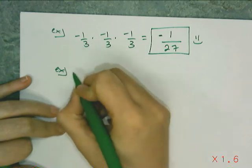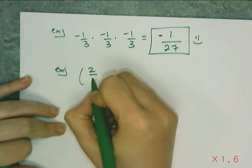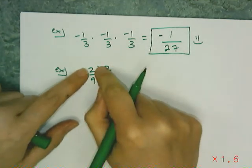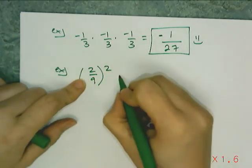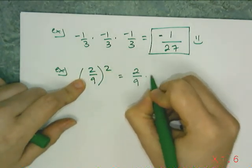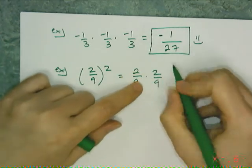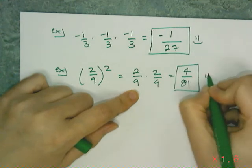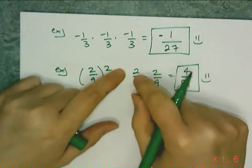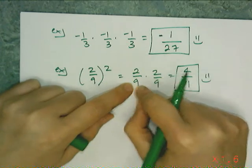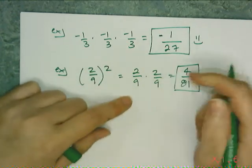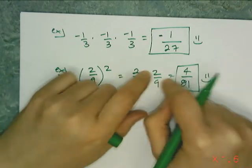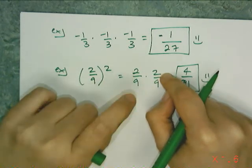A quick reminder about exponents and fractions: if I have 2 ninths squared, that means 2 ninths times 2 ninths. Two times 2 is 4, and 9 times 9 is 81. A really common mistake is squaring the numerator but forgetting to square the denominator. So make sure you expand it out either on paper or mentally — it's numerator times numerator, denominator times denominator.